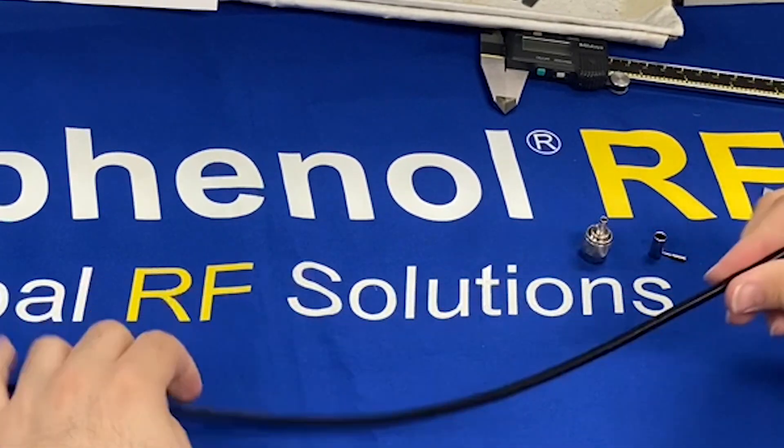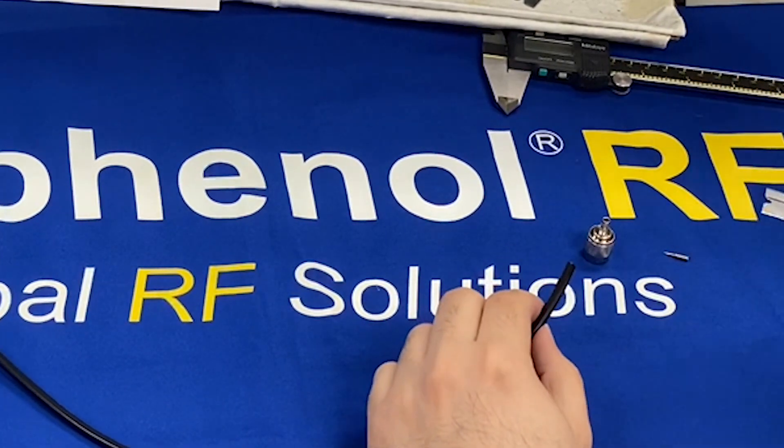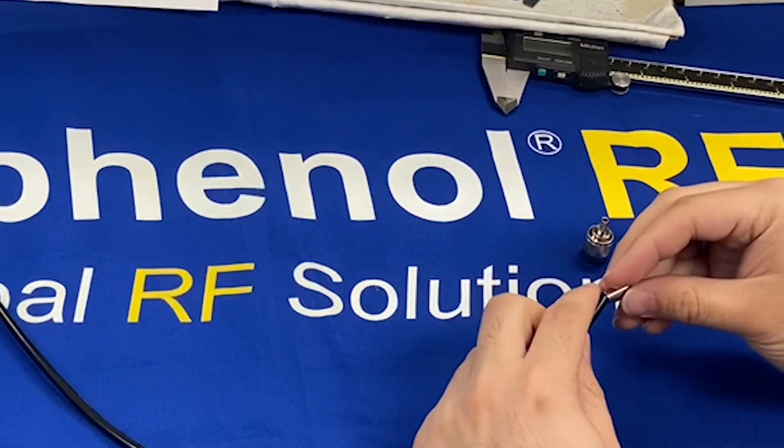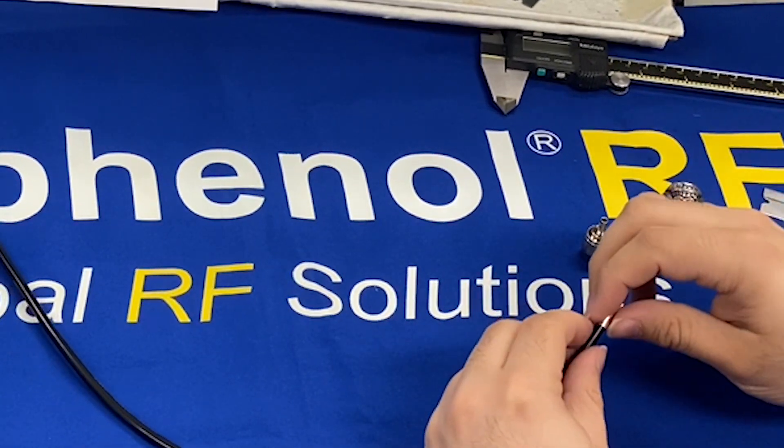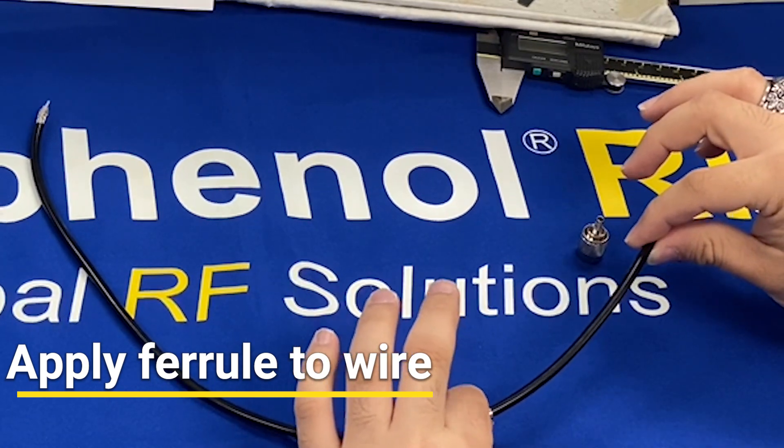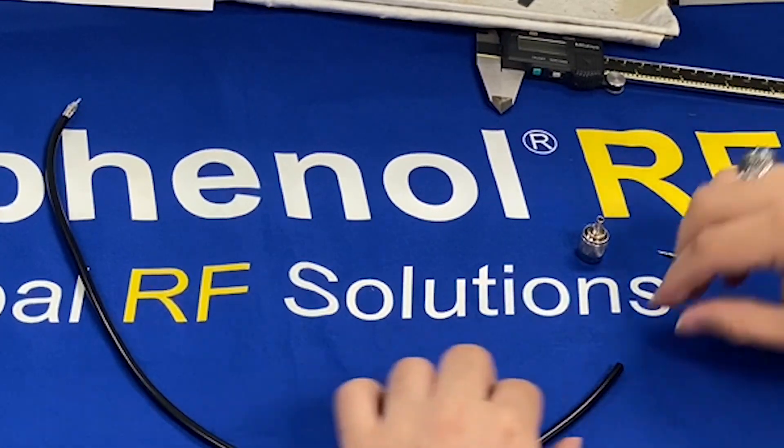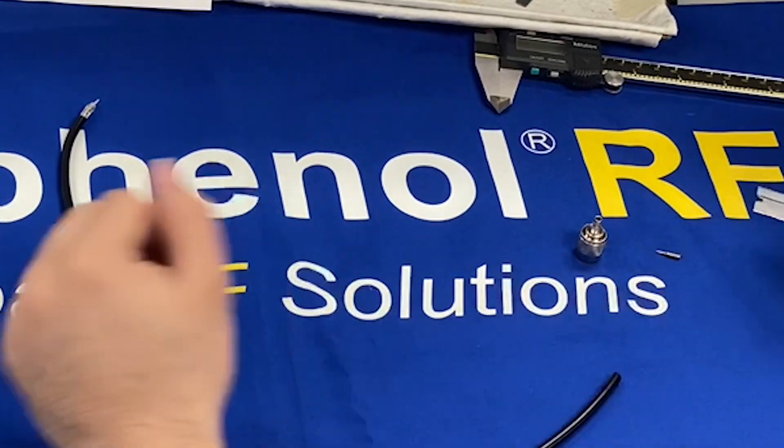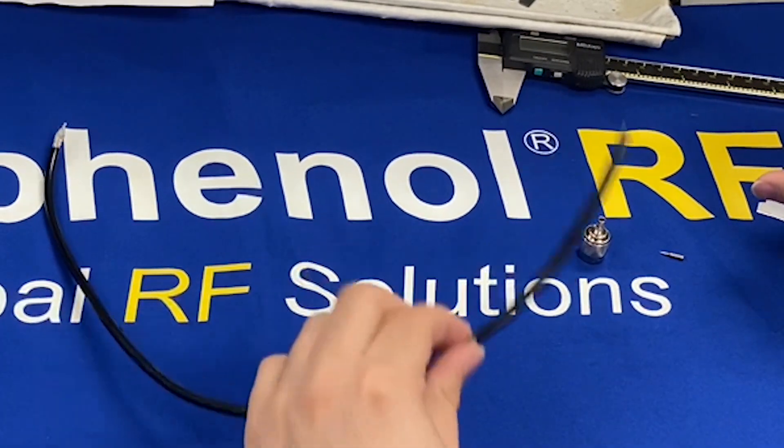We have a length of cable here. First step is always to take your ferrule or your heat shrink tube or anything that needs to go on the length of the cable and apply that first before stripping the cable. It becomes difficult afterwards after you strip the cable and the braid is flared to put these accessory pieces on.